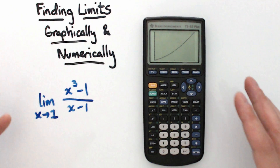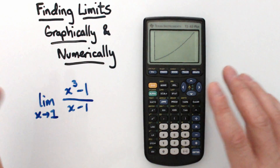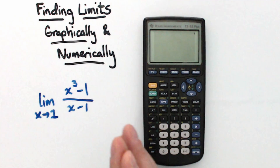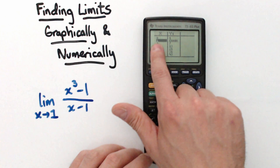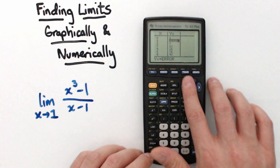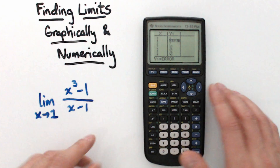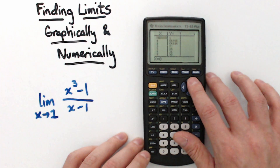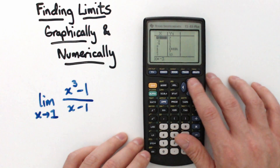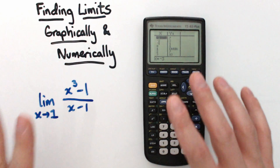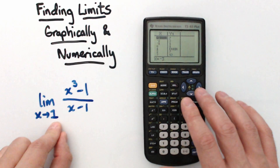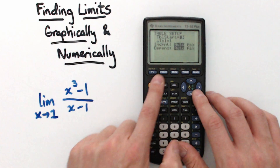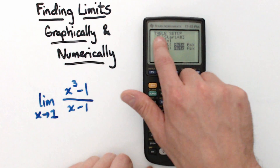A better way to do this is numerically, using the table function on the calculator. Hit Second Table and you'll see a table where at x = 1 the y-value shows an error, which is expected. But the problem with the default table is it just goes 0, 1, 2, 3 and negative 1, negative 2, negative 3. We want to get infinitesimally closer to 1 from either side, not just step by integers.